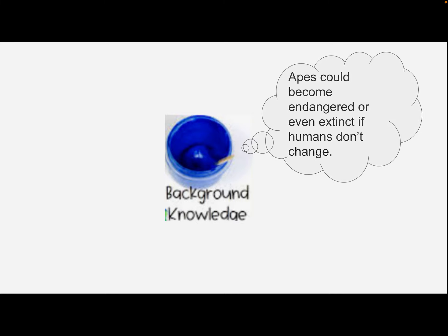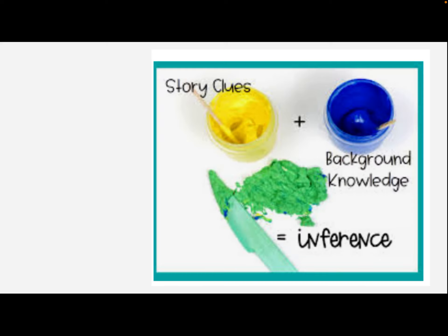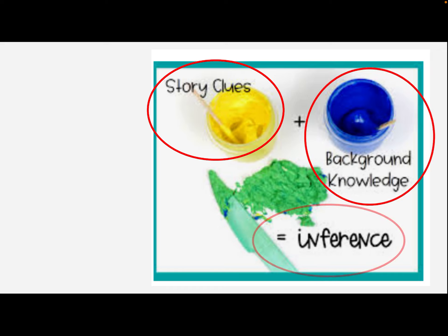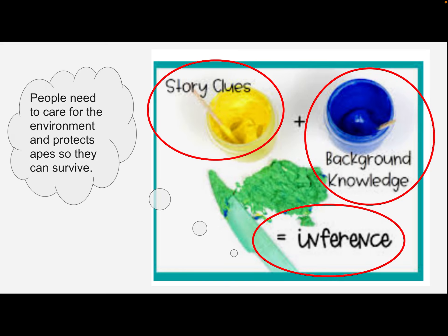Now let's take that information and combine it with our background knowledge. I know that apes could become endangered or even extinct if humans don't change. I know that when there are only a few animals left in a species, they are called endangered. Let's put this information together to see if we can get the author's message: think about the story clues, think about your background knowledge, and then make an inference.